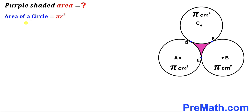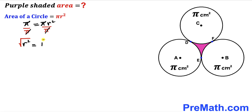So therefore I can write: pi equals pi times r squared. Now I'm going to divide both sides by pi to isolate r squared. The pi cancels on both sides, so r squared equals 1. Taking the square root on both sides, our radius lowercase r turns out to be positive 1 centimeter. Thus the radius for these circles is 1 centimeter.